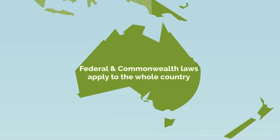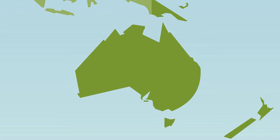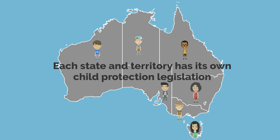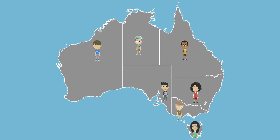Federal or Commonwealth laws apply to the whole country, and if there is a conflict between a state or territory law and a federal or Commonwealth law, the federal or Commonwealth law usually predominates. Each state and territory has its own child protection legislation, so you'll need to refer to the relevant acts or statutes for your own state or territory. There are some differences in these laws between the states and territories, and there is no overriding federal law relating to child protection.